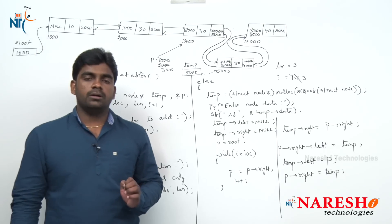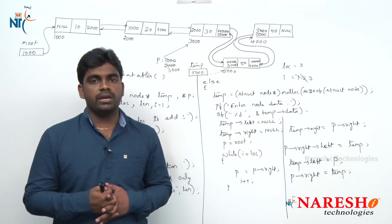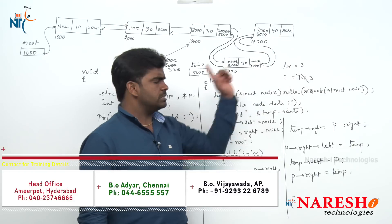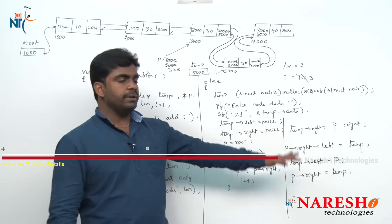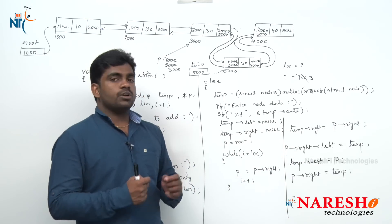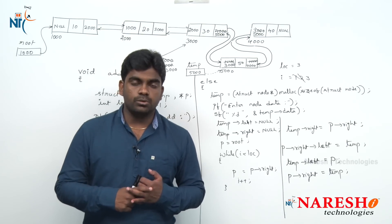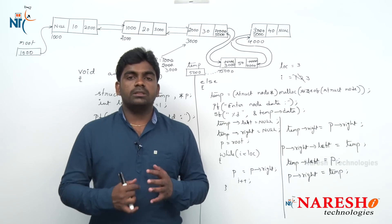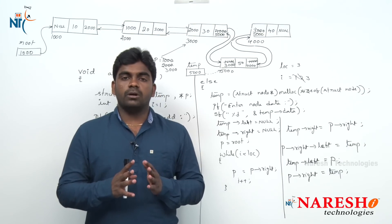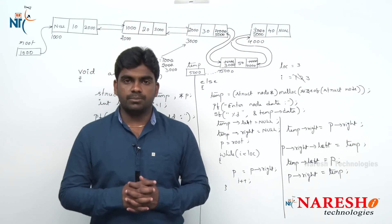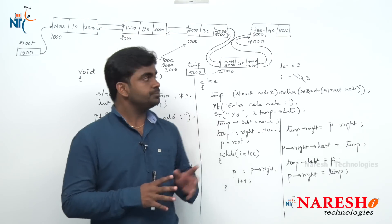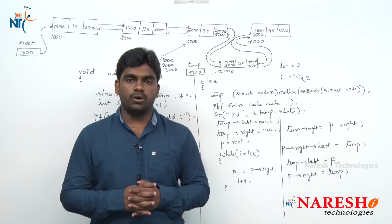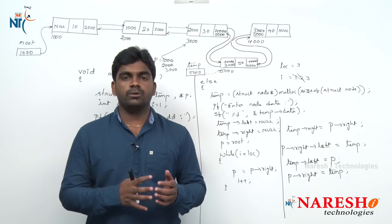This is how to add a node after a specified node in a double linked list. The same logic applies automatically to the last node as well. For deletion operations — how to delete the first node, last node, or a specified node in the middle — you can try those yourself, since we already discussed deleting nodes in the single linked list. Hope you enjoy this video. For more videos please login to the NARESH IT channel. Thank you.